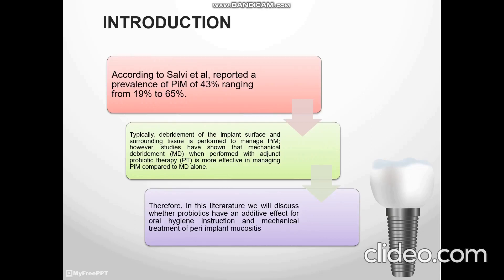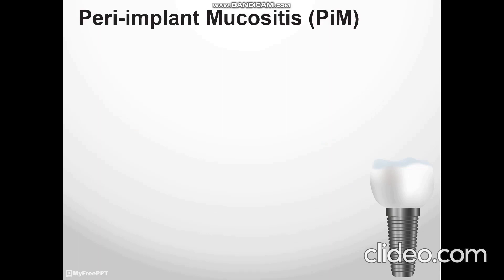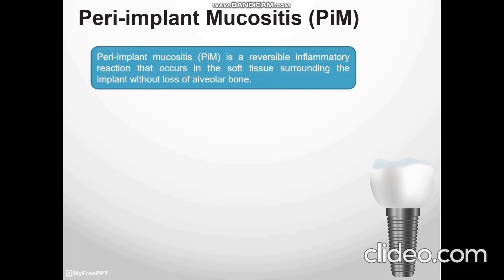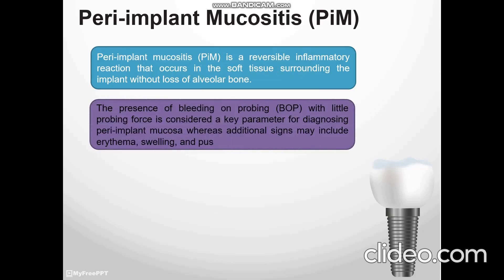In this literature review, we will discuss whether probiotics have an additive effect for oral hygiene instruction and mechanical treatment of peri-implant mucositis. Peri-implant mucositis is a reversible inflammatory reaction that occurs in the soft tissue surrounding the implant without loss of alveolar bone. Bleeding on probing is considered a key parameter for diagnosing peri-implant mucositis.